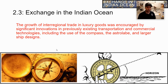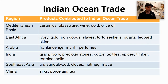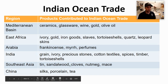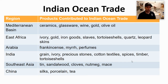The growth of inter-regional trade in luxury goods was encouraged by significant innovations in transportation and commercial technologies, including use of the compass, the astrolabe, and larger ship designs. There are many goods traded along the Indian Ocean Trade Network — the PowerPoint has a full list of examples for reference.